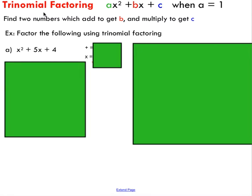We're going to look at two different types of trinomial factoring. The first is when we have a quadratic relationship where the a value — the coefficient in front of x squared — is equal to one. All the examples on this slide will just have a one in front. If the coefficient is not one, you've got a totally different monster, and we'll look at some examples of those in a minute.